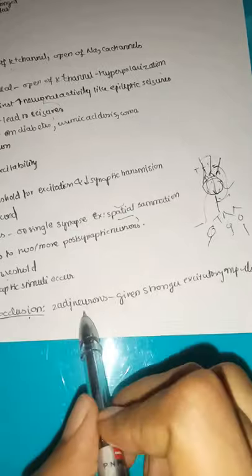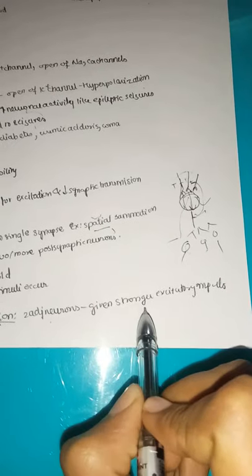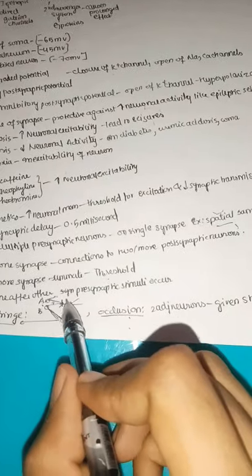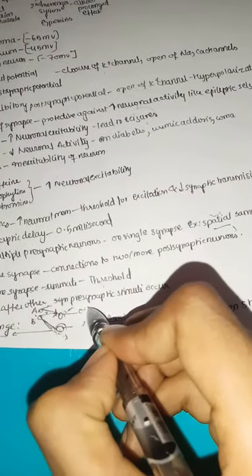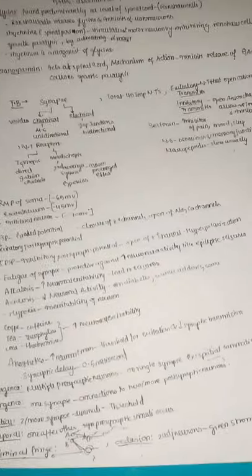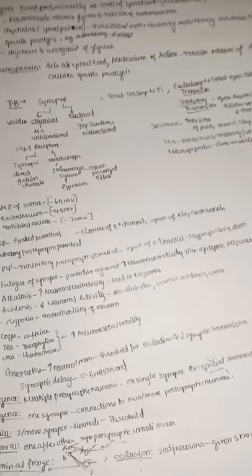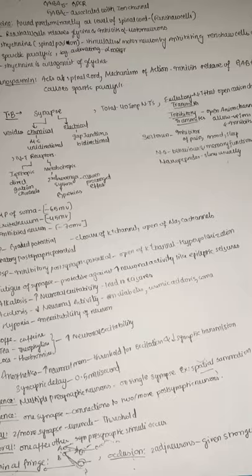Occlusion is where two adjacent neurons receive stronger excitatory inputs from two neurons, both providing proper stimuli to a single neuron. Occlusion differs from subliminal fringe in that here the input is sufficient to reach threshold.